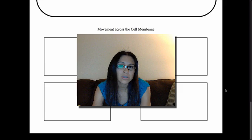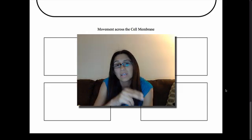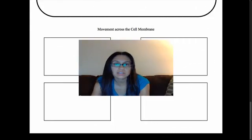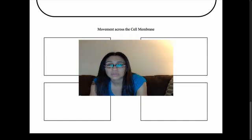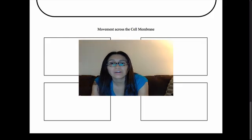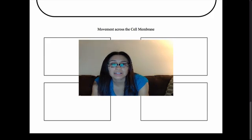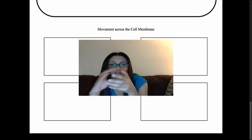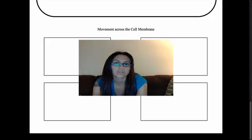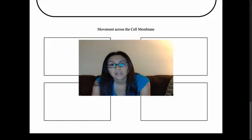So if every single one of your cells needs to take nutrients and oxygen in, and take waste out, how is that stuff getting in and out of the cell? These nutrients, oxygen, and wastes are all molecules. We're going to look at three different ways that molecules can move across the cell membrane, since the cell membrane surrounds the outside of the cell and is the outer barrier — all molecules have to pass through it to get in or out.